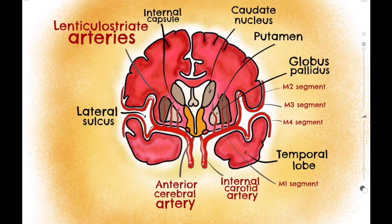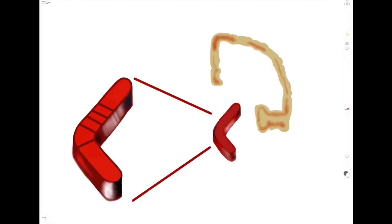The lenticulostriate arteries branch off from the M1 segment of the MCA. These arteries are small branches ascending to supply the internal capsule, reticular formation, and the striatum. Therefore, these arteries in particular are the ones we'll be considering when discussing internal capsule stroke.